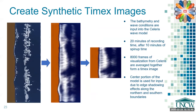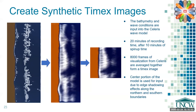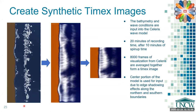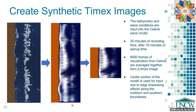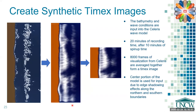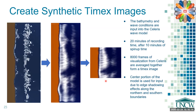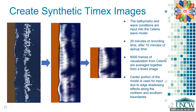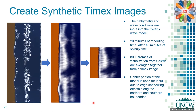A bathymetry and wave condition are then input into the wave model. 20 minutes of this wave visualization are then recorded after 10 minutes of spin-up time. 8,000 frames of the visualization are averaged together to form one Timex image. The center portion of the image is then cut out into a square for ease of input into the FCN, and also because of the edge shadowing effects along the northern and southern boundaries caused by the sponge layers in the wave model.